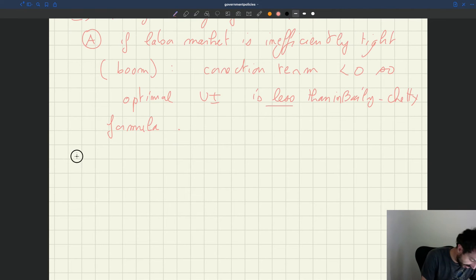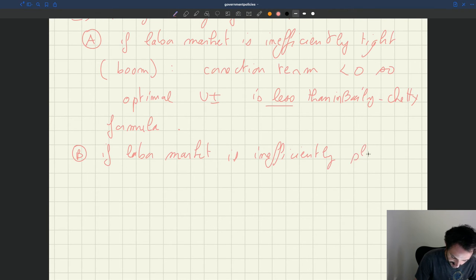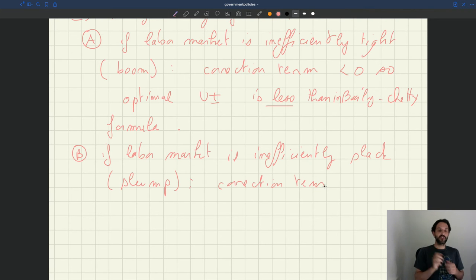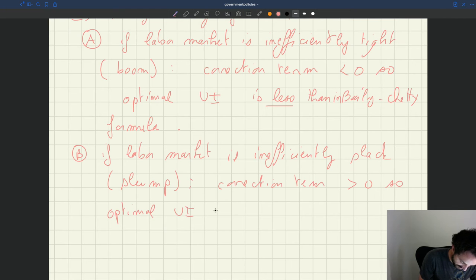And then we can look at the opposite situation. Case B: if the labor market is inefficiently slack, so that's a slump, a recession. Then the correction term—so the correction term is first effect of tightness on welfare. If the tightness is too low, increasing tightness is good, so we have a positive term. The effect of UI on tightness here is positive, so the correction term will be positive. And so you add a positive term to this formula, and so that means that the optimal UI is more than in the Bailey-Chetty formula.